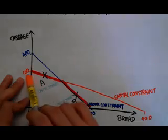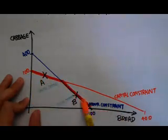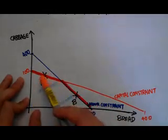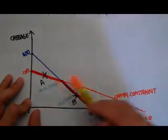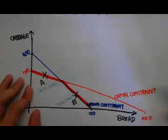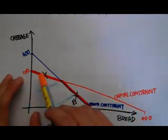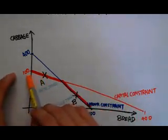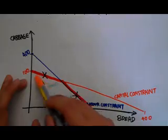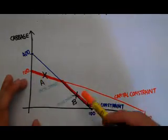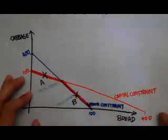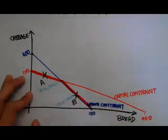For capital, the respective maximum combinations would be 100 and 400. My PPF is going to be this red line over here, because I need both capital and labor to produce cabbage and bread. This red portion is my production possibility frontier. If I were to produce at point A — lying on the capital constraint — I am capital intensive. And if I were at point B on the labor constraint, I would be labor intensive.